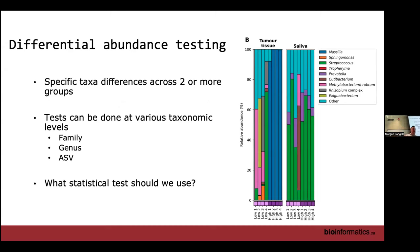Differential abundance testing is literally just identifying which taxa are different between two or more groups. Compared to things like alpha and beta diversity, which are more complex, this is really one of the most simple questions you could ask — it's literally saying, what bacteria are different between this group and this group? That should be pretty straightforward.